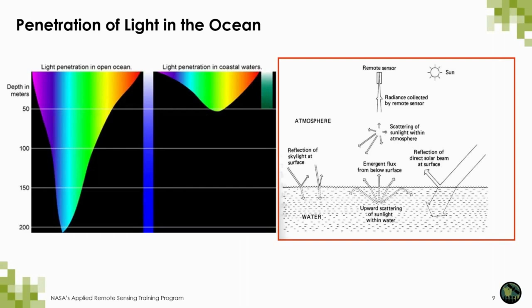For those of you who are divers, have you ever seen how blood looks at depth? It actually looks dark green — not red. The penetration of light in the water column is wavelength dependent. Longer wavelengths such as reds are absorbed within the first few meters of water. In coastal areas, very little red is still available to interact with matter at 20 meters depth. Most shorter wavelengths — the violets and blues — are also absorbed within the first tens of meters in coastal waters due to absorption by different constituents.